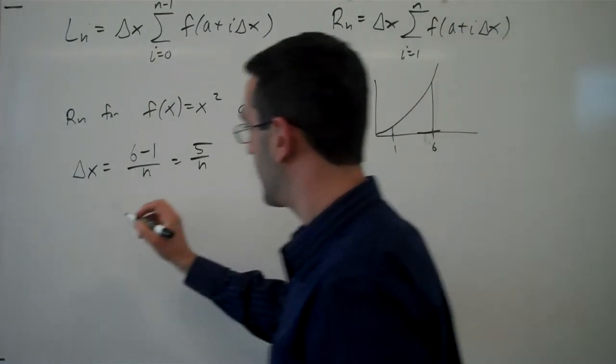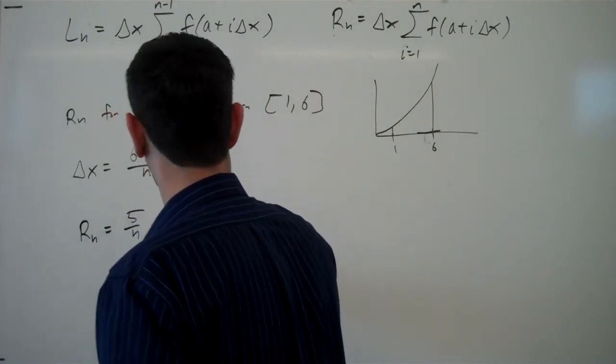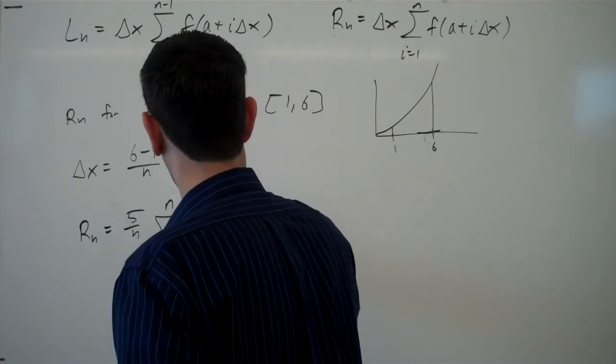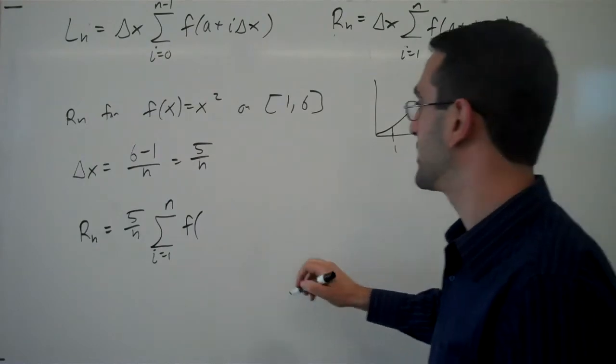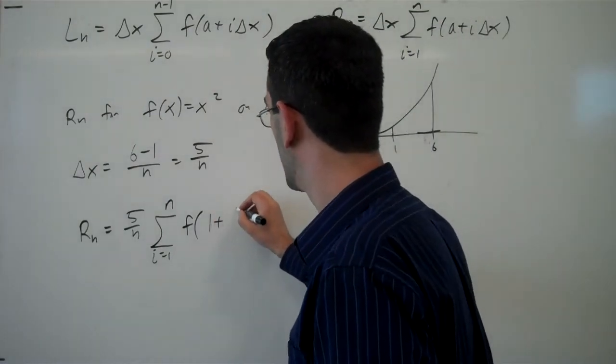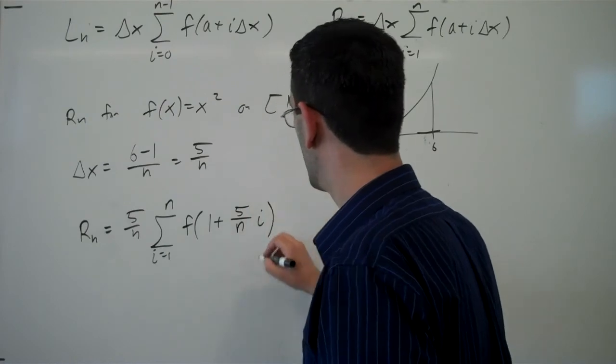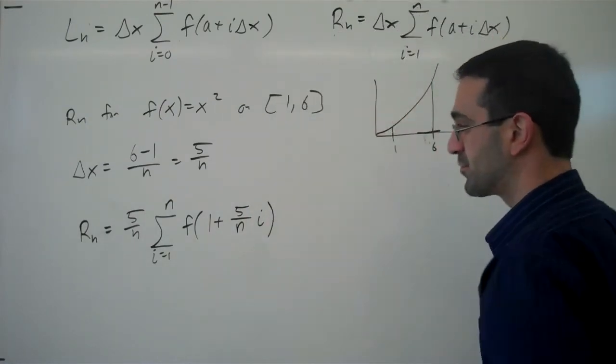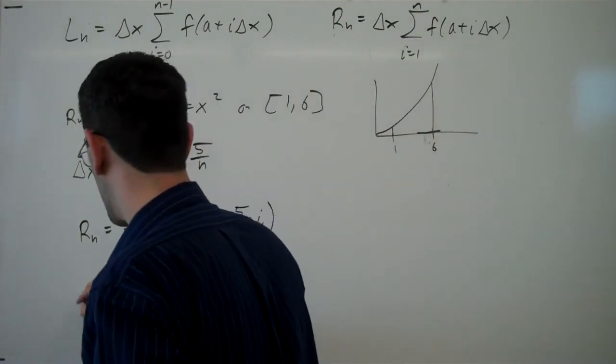So in our Rn expression here, we'll have delta x, which is 5 over n, times the sum from 1 to n, f of a—a is our starting value here, right? So 1 plus 5 over n times i. Delta x is 5 over n, multiplying i. And now we can use our function to simplify this.